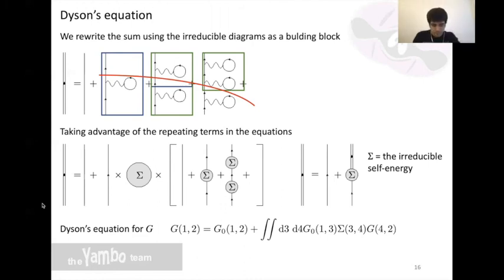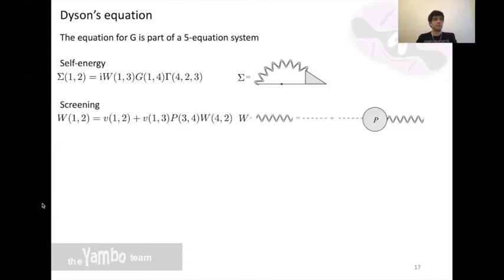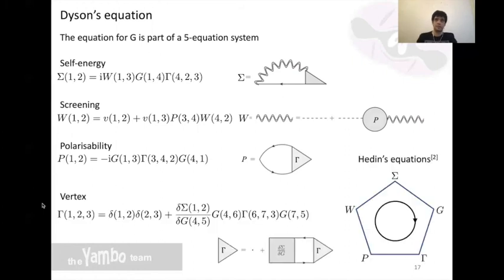This is part of a system of five equations that you need to solve in order to determine the solution for your problem. What are the remaining four equations? You'll have the self-energy, the electronic screening describing how bosons mediate interactions between electrons, the polarizability describing how the bosons interact with other electrons in your system, and the electronic vertex describing how different lines are combined. Together with the equation for the Green's function, they form what we call the Hedin set of equations, usually shown in this way to illustrate the interdependence between different functions.